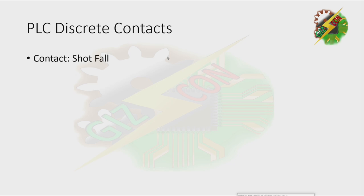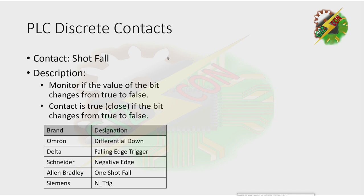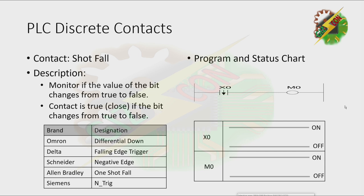Next, short fall. It monitors if the value of the bit changes from true to false — the contact is true or closed if the bit changes from true to false. These are the different names of short fall depending on the brand, and these are the symbols for short fall depending on the brand. A short fall is actually the reverse of the short rise.